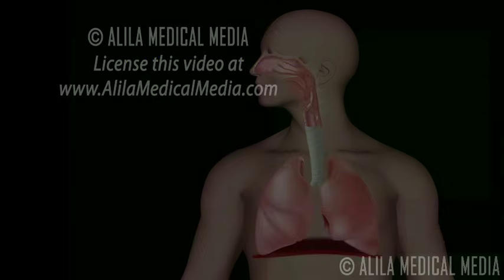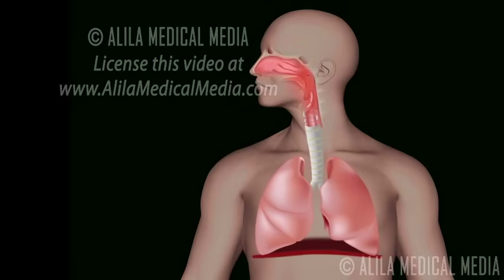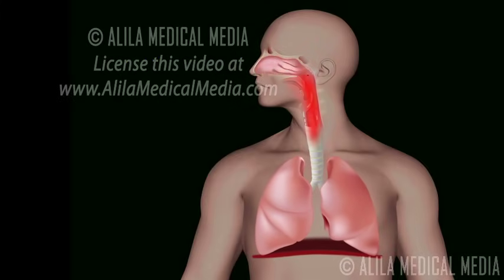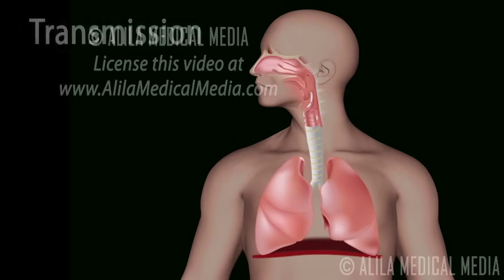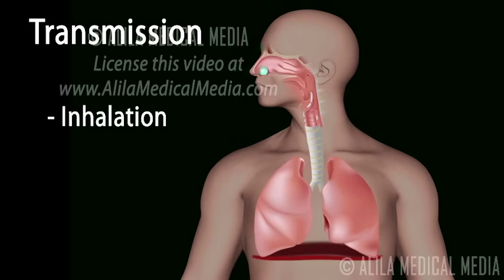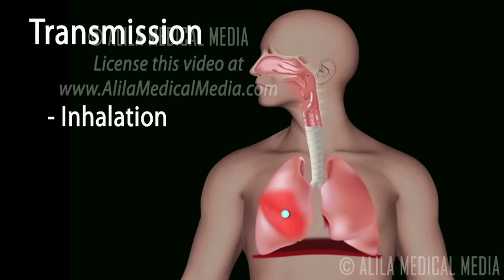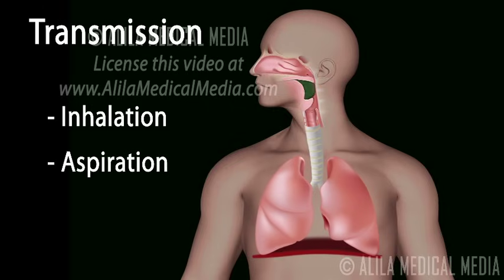Pneumonia commonly starts as an infection of the upper respiratory tract, a cold or flu, which then spreads to the lungs. The most common routes of transmission are through inhalation of contaminated aerosol droplets and aspiration of oral bacteria into the lungs.